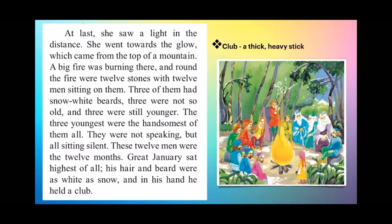At last she saw a light in the distance and went towards the glow, which came from the top of a mountain. A big fire was burning there, and around the fire were twelve stones with twelve men sitting on them. Three had snow-white beards, three were not so old, three were still younger, and the three youngest were the handsomest. They were all sitting silently. These twelve men were the twelve months. Great January sat highest of all — his hair and beard were as white as snow, and in his hand he held a club, which means a thick or heavy stick.